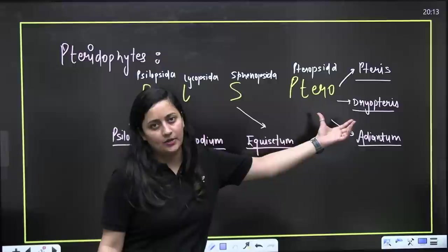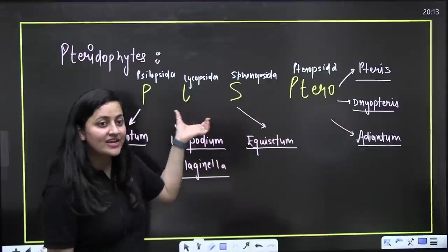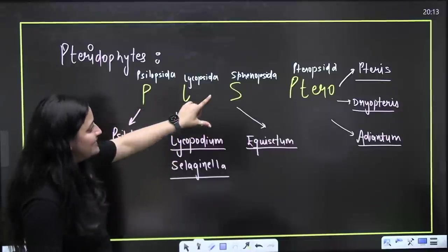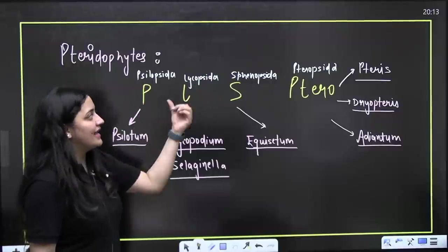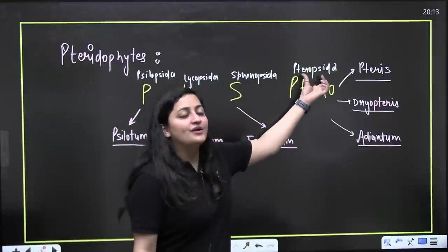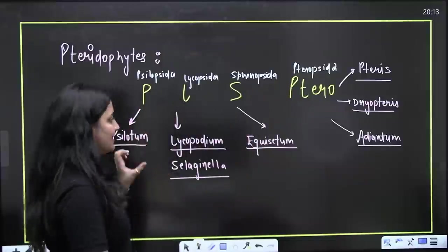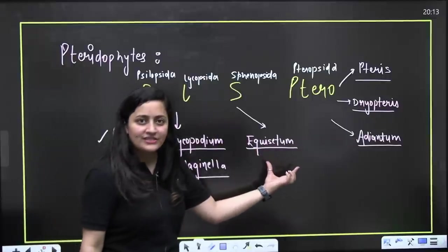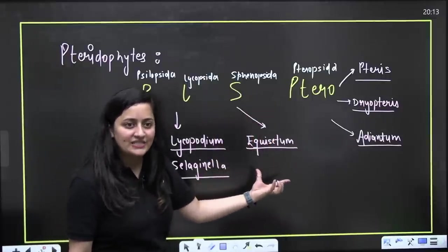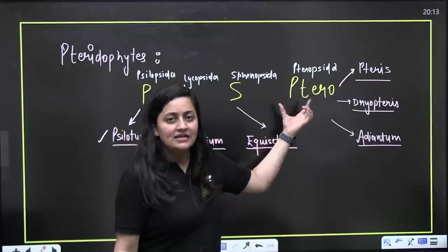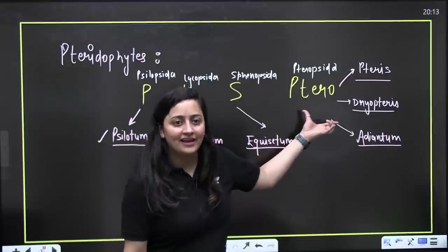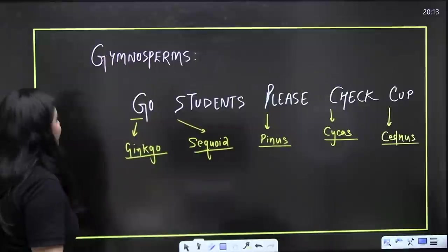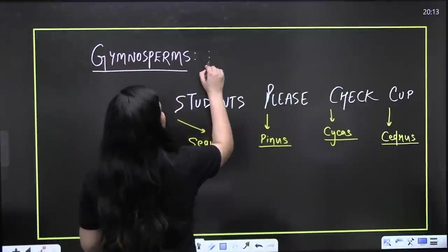The trick for pteridophytes is 'Please Ptero.' P is Psilopsida — example Psilotum; L is Lycopsida — examples Lycopodium and Selaginella; S is Sphenopsida — example Equisetum; Ptero is Pteropsida — examples Pteris, Dryopteris, and Adiantum, which is the water fern.